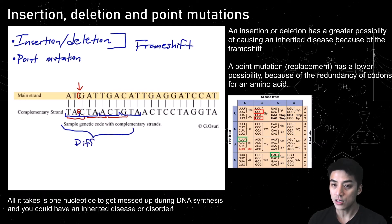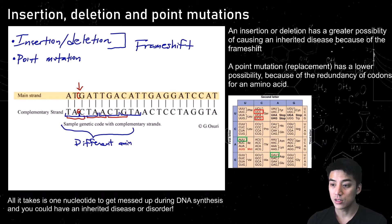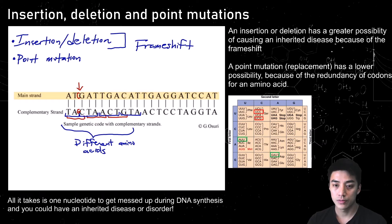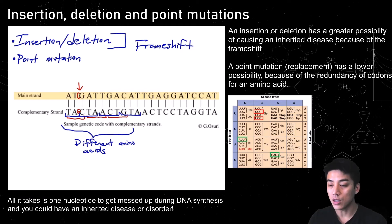This occurs when there's an insertion. A deletion would cause the same thing — if you delete one of the nucleotides, everything would get shifted over in the other direction, but it still results in different amino acids. So insertion and deletion are a lot worse than a point mutation.